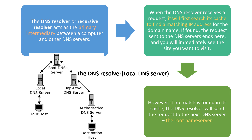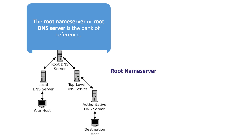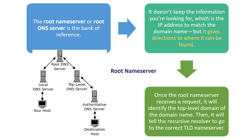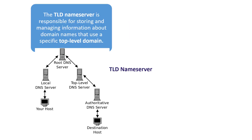The root name server acts as a main bank of reference — it doesn't store the IP address you are looking for, but it gives directions to where it can be found. Once the root name server receives a request, it identifies the top-level domain of the domain name — for example, for google.com, the top-level domain is .com — and then tells the DNS resolver to go to the correct TLD name server.